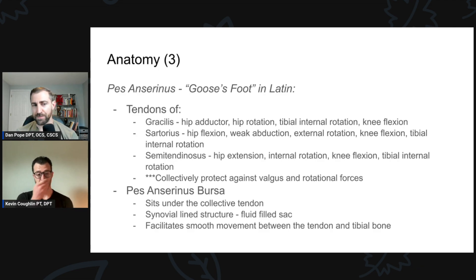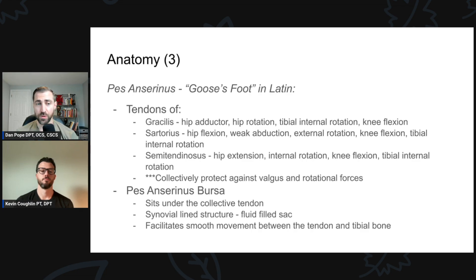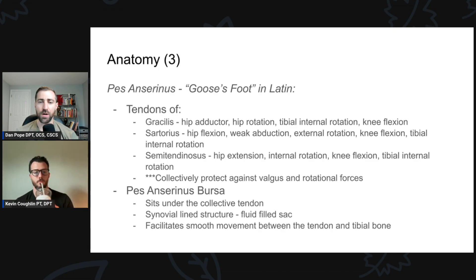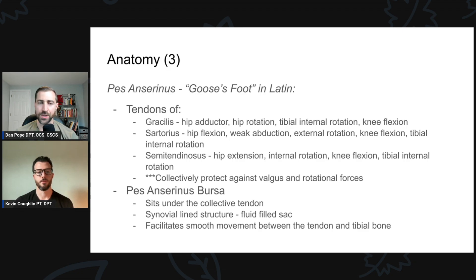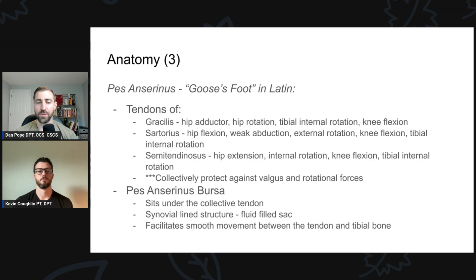The sartorius is a hip flexor and a weak abductor — doing the opposite of the gracilis — and is also an external rotator of the hip. It performs knee flexion as well as tibial internal rotation. The semitendinosus is obviously a hamstring muscle, so it extends the hip, internally rotates the hip, flexes the knee, and also helps with tibial internal rotation.